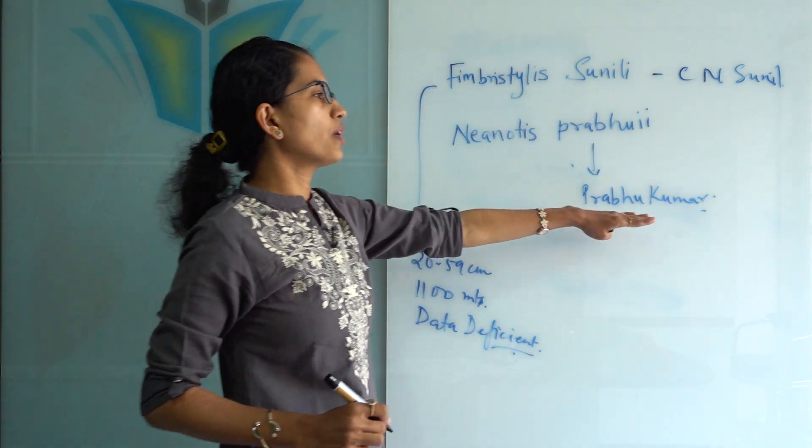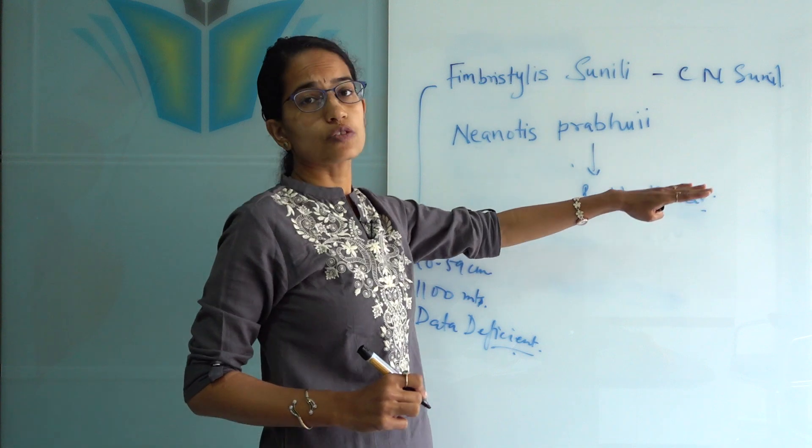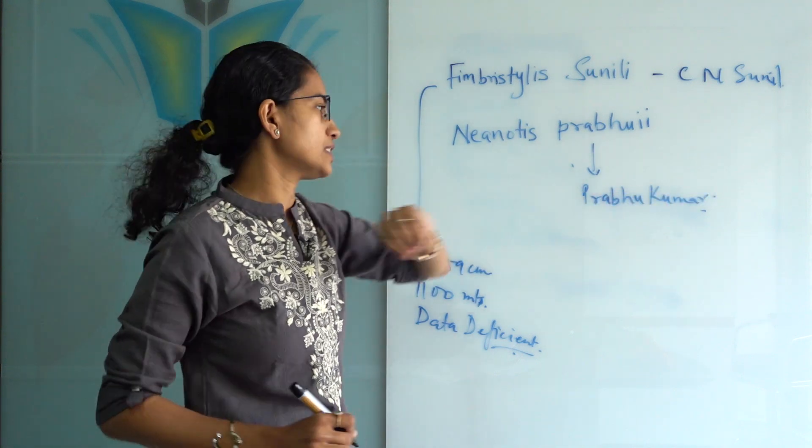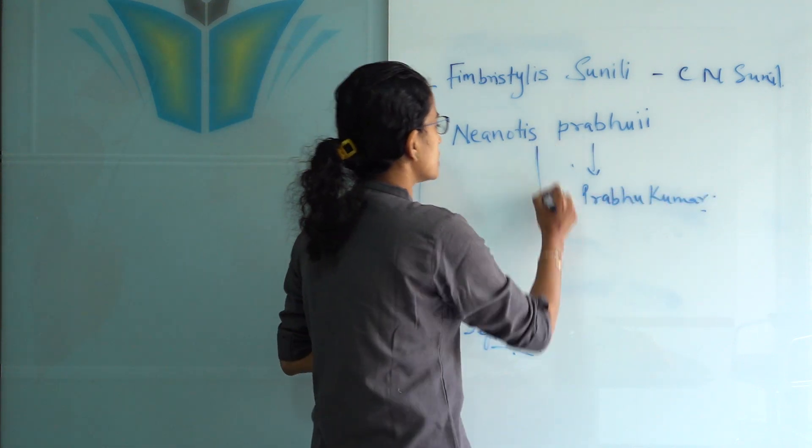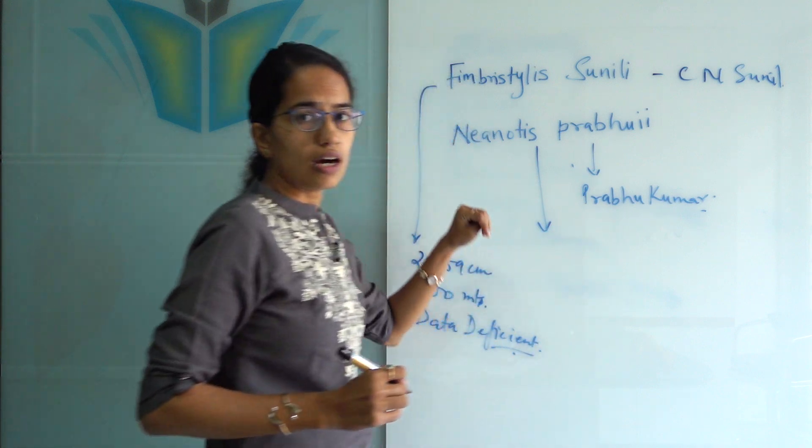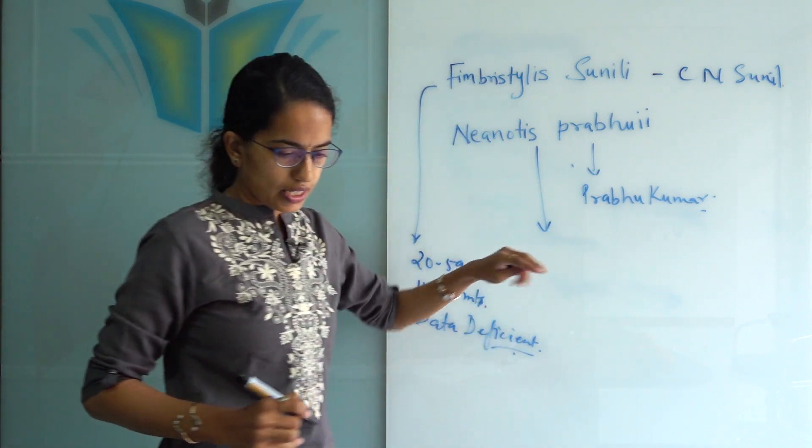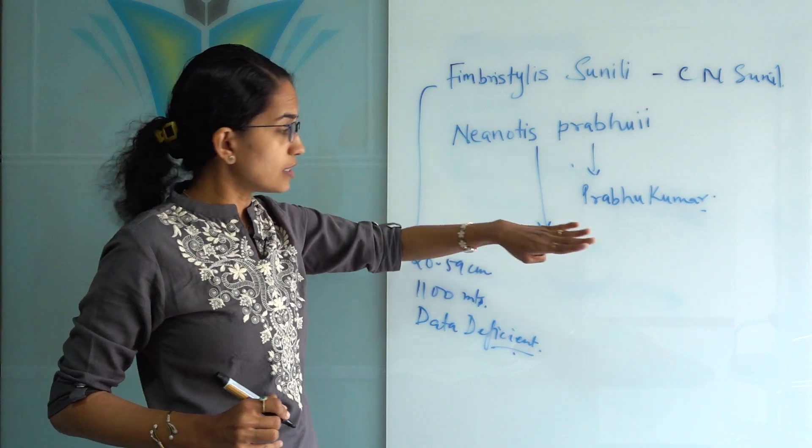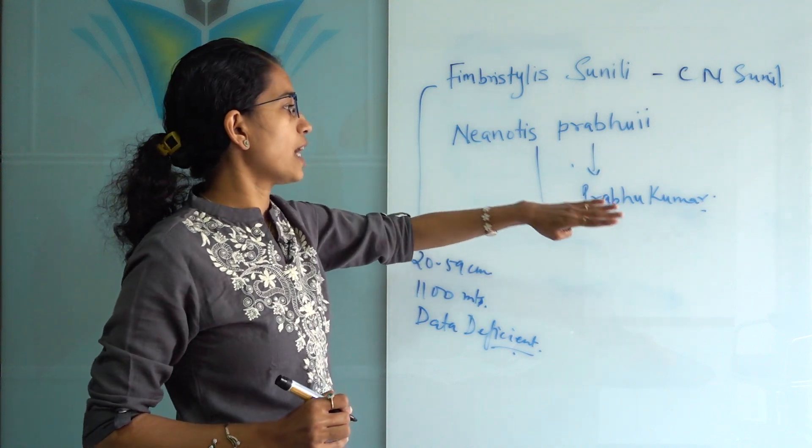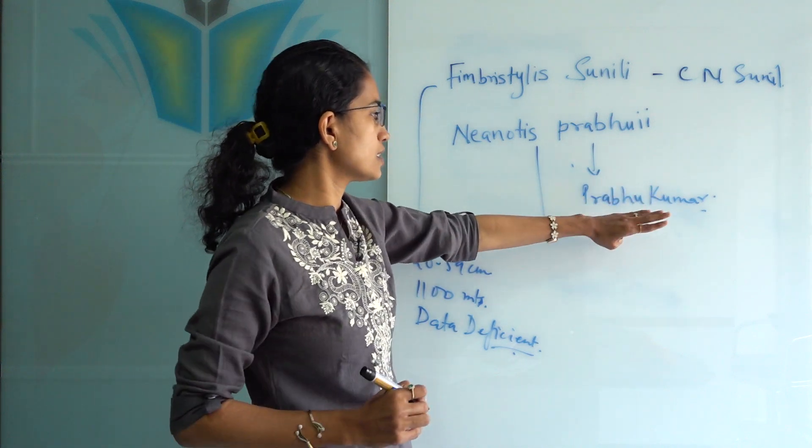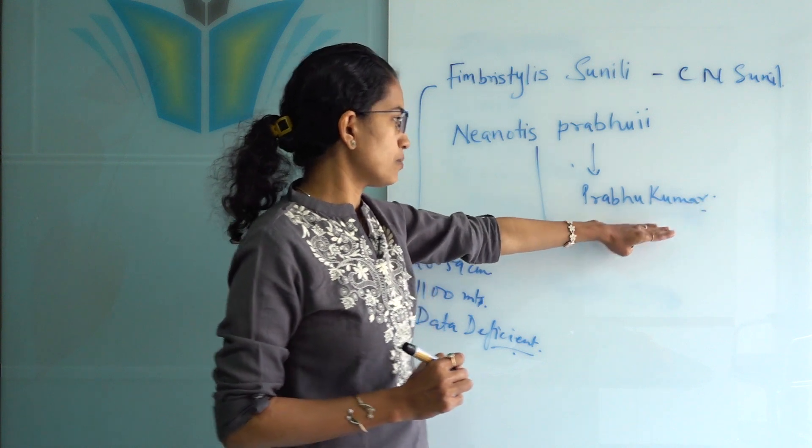This species is a prostate perennial herb and grows up to a height of nearly 70 centimeters. This species has been discovered and honored in the name of Professor Prabhu Kumar.